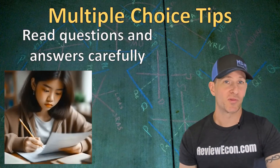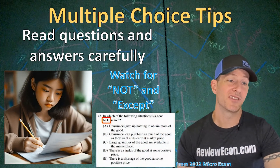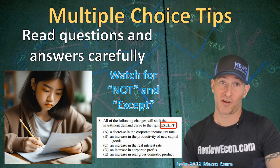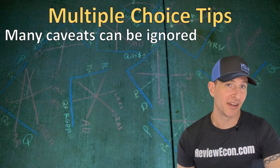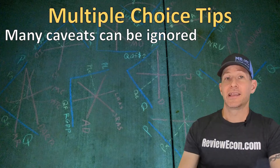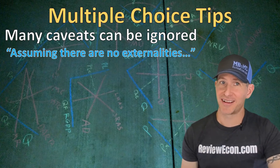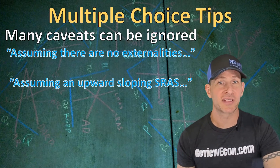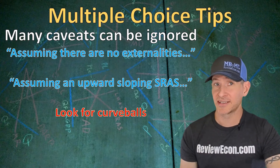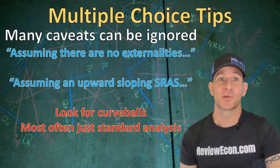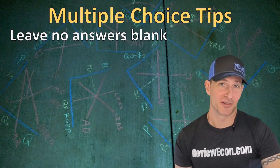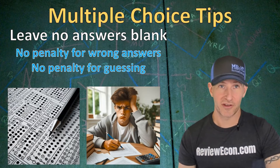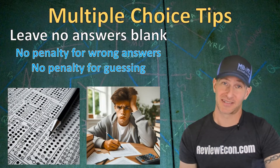Make sure you read the multiple choice questions very carefully. Questions that include 'not' or 'except' can be tricky, because the correct answer will actually be a wrong answer in the usual sense. You'll also see questions with caveats like 'assuming no externalities' in micro, or an assumption of an upward-sloping short-run aggregate supply curve in macro. Always read those caveats, but most of the time standard analysis will apply. Also, never leave a single answer blank — there is no penalty for guessing, so make sure you've answered every single question before you're done.